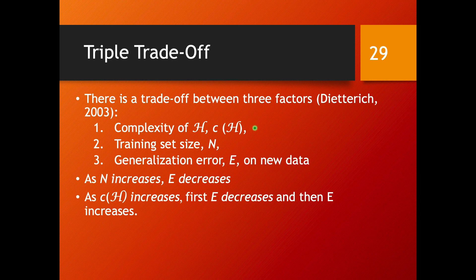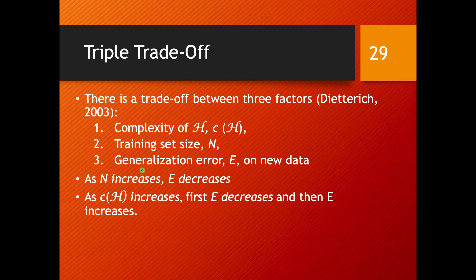It's important to realize that we have a trade-off between three factors. One is the complexity of your hypothesis set — you can choose a simpler or more complex model. Another factor is the training set size — you can choose more or fewer examples, and there is a cost associated with collecting more data. You do this for the goal of estimating and minimizing the generalization error on new data, on data that you haven't even seen. As you increase the number of samples, the generalization error of your model is going to decrease, becoming more specific to the real distribution you are trying to learn.